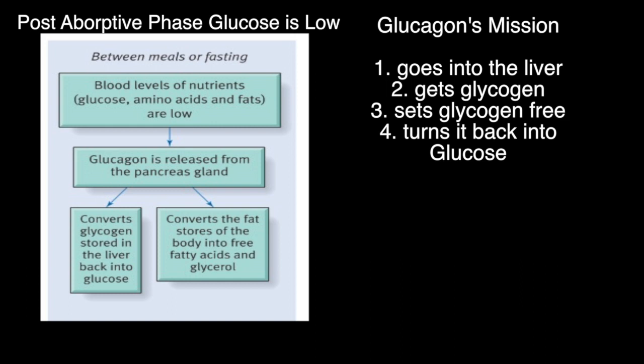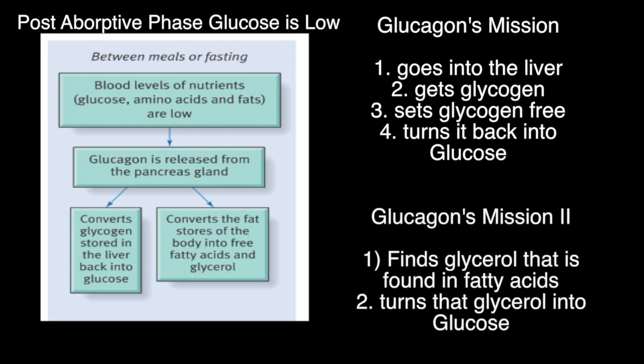Remember, glycogen is just another name for glucose that is being stored. So glucagon goes into the cell, gets the glycogen that's being held captive, and changes it back into its original form — glucose — to be used. Glucagon also has another important function: it takes the glycerol found in fatty acids and turns it into glucose, which is important for brain functioning since we can't use fatty acids or glycerol directly.